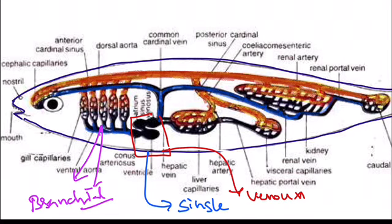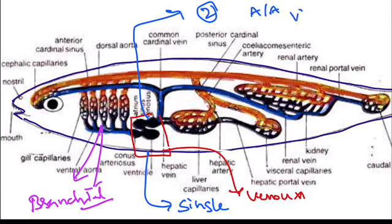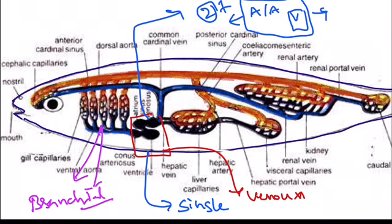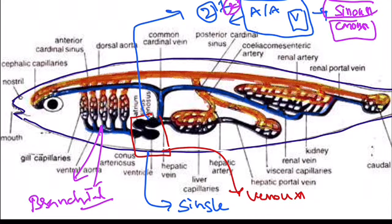The heart contains only two true chambers: the auricle or atrium, and the ventricle. In addition to these two chambers, two accessory chambers are also present. The accessory chambers are called sinus venosus and conus arteriosus. So in fish circulation, two true chambers plus two accessory chambers are present.